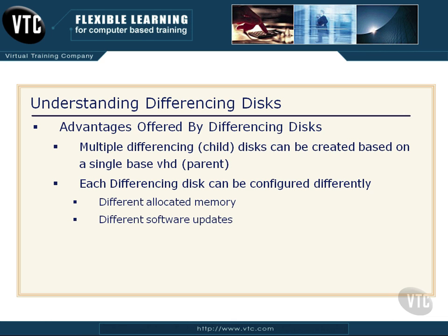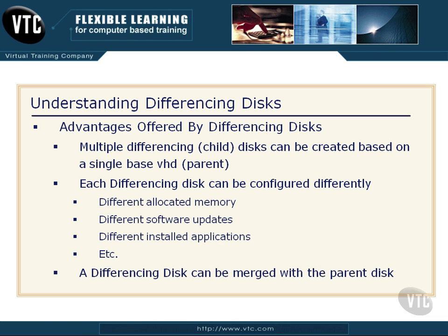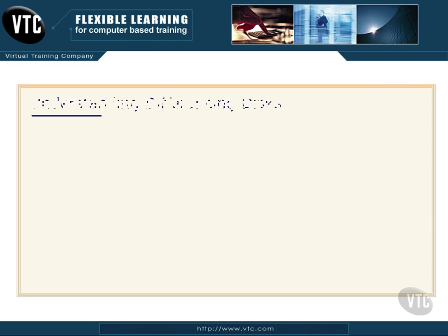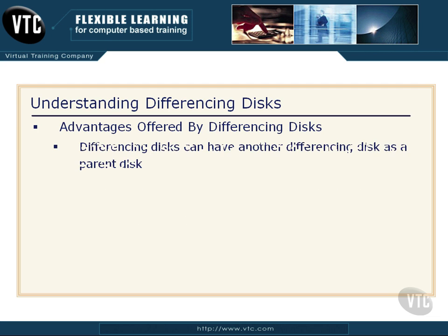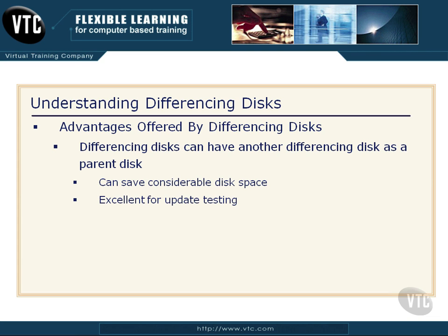I can have a single parent base VHD — you'll hear it called the base disc — then I can have twelve differencing discs, and all twelve people could configure their machine however they want. You can have things like different allocated memory, different software updates, different installed applications, and on and on. The differencing disc can later, if you would like, be merged with the parent disc and they kind of all become one again, with the base disc getting updated with the differences. A differencing disc can also have another differencing disc as a parent disc, so if you're doing testing, you can save considerable disk space and try updates on different levels.